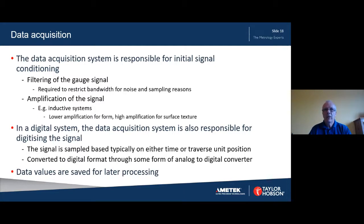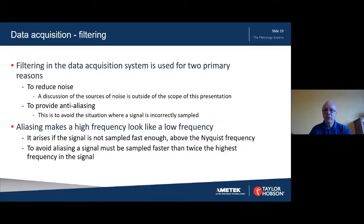In a modern digital instrument, the data acquisition system is responsible for converting the signal from analog to digital. This implies some form of sampling which is usually triggered either by timer or some feedback from the traverse unit position. There might also be a need for amplification, especially where there are selectable ranges such as in inductive systems. However, there will almost certainly be a filtering stage. Filtering is important for two primary reasons: to reduce or suppress noise, and to ensure that sampling conditions are met by limiting the upper frequencies admitted to the analog to digital conversion stage. If the upper frequencies are not adequately suppressed, then aliasing may occur. This is where a signal is sampled more slowly than necessary, resulting in the sampled signal appearing like a lower frequency signal.